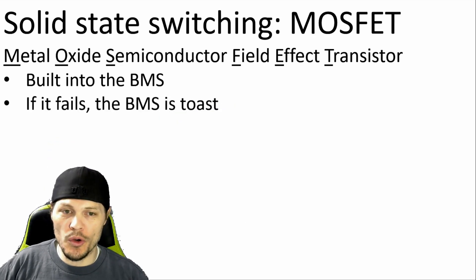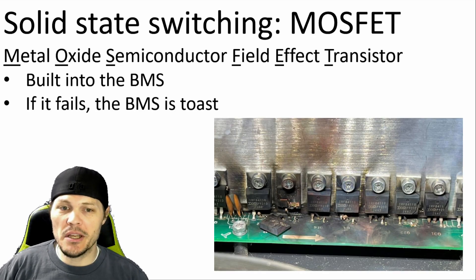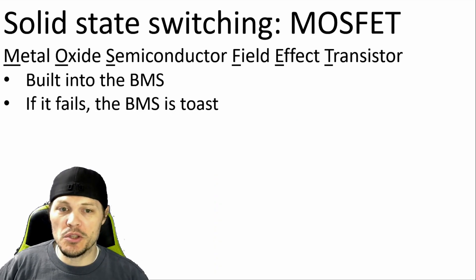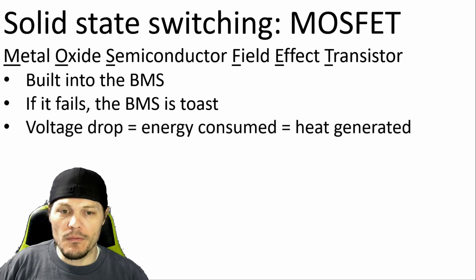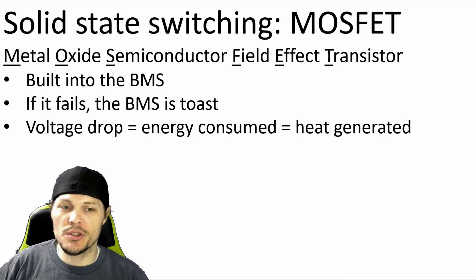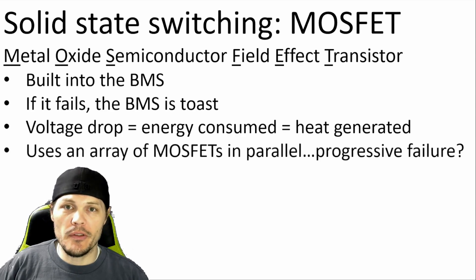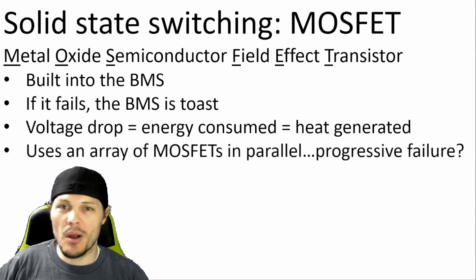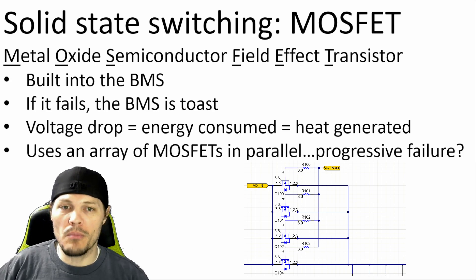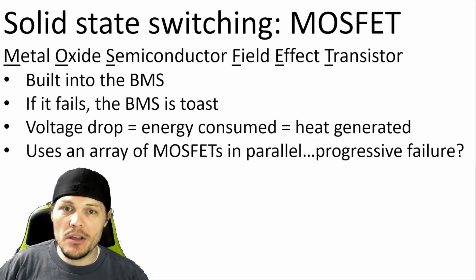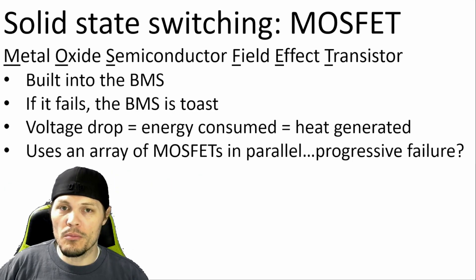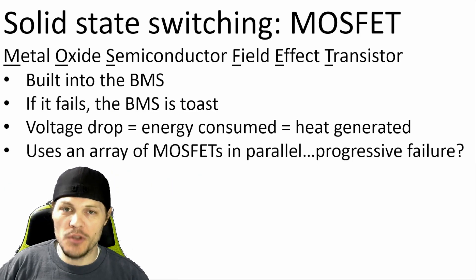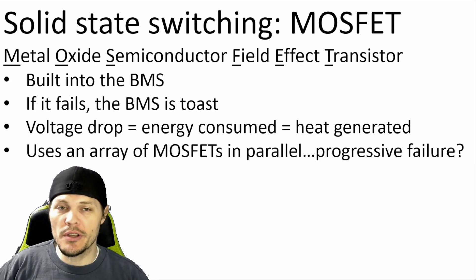Also, MOSFETs fail shorted — in other words, they remain connected to full power until they melt, and that could expose the battery to damage. Additionally, there's a voltage drop across the MOSFET, which means it consumes energy and generates heat that needs to be dissipated. Depending on the MOSFET, it may not be able to handle hundreds of amps. If not, an integrated circuit rated for hundreds of amps probably employs a parallel array of several MOSFETs. However, if a single MOSFET fails, all the other MOSFETs in that array are subject to relatively higher amperage each, which could lead to progressive failure.